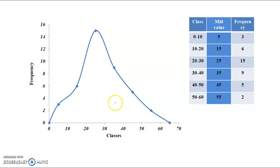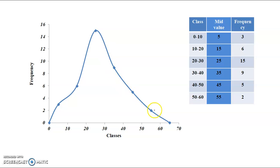The frequency polygon and the frequency curve are related but different. If we look at any method, the difference between the frequency polygon and the frequency curve is that the polygon uses straight lines connecting points, while the frequency curve uses a smooth line. That is the difference.